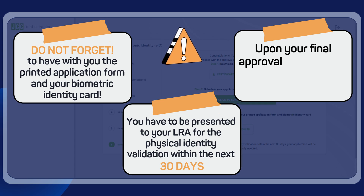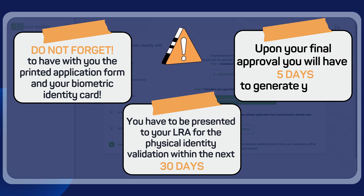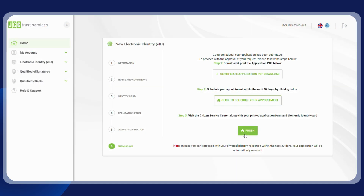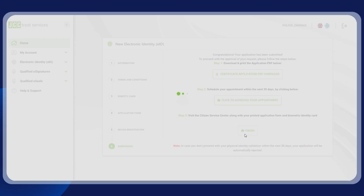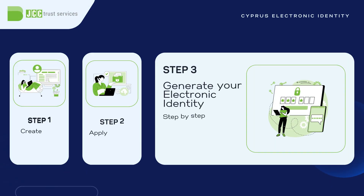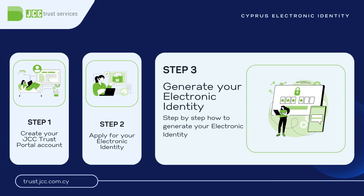After your physical identity validation, your application will be forwarded for final approval. Upon final approval, you will receive an SMS and email and will have five days to generate your eID. As soon as you receive the approval SMS and email, please proceed as soon as possible with the generation, since you will have only five days. If you don't proceed on time, you will have to repeat the whole procedure from the beginning.